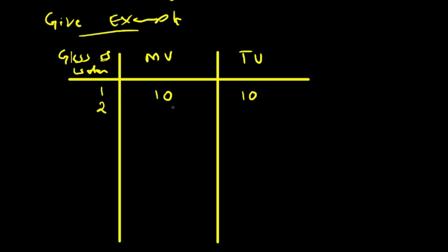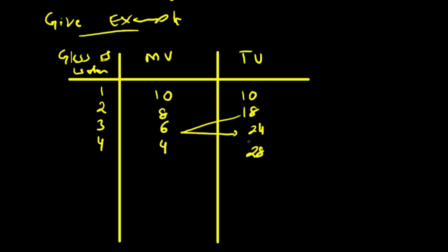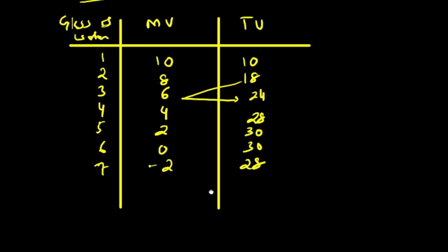For example: first glass gives MU = 10, TU = 10. Second glass: MU = 8, TU = 18. Third glass: MU = 6, TU = 24. Fourth glass: MU = 4, TU = 28. Fifth glass: MU = 2, TU = 30. Sixth glass: MU = 0, TU = 30. Seventh glass: MU = −2, TU = 28. This table illustrates the law of diminishing marginal utility.